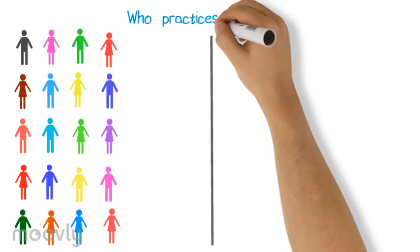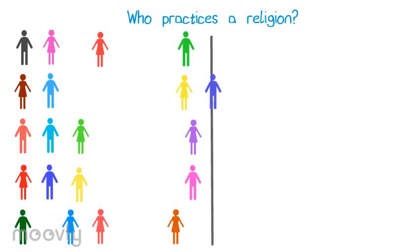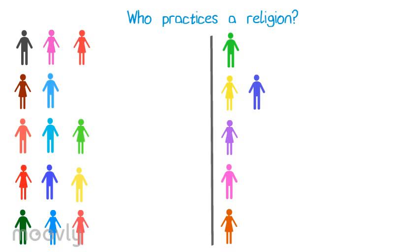Now you ask a new question to the group, for example, who practices a religion? The participants that practice a religion now cross the line. Ask these participants if they would like to tell anyone about their religion before others ask them any questions.